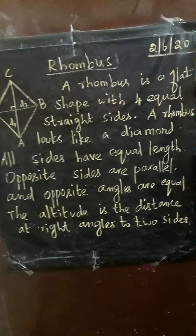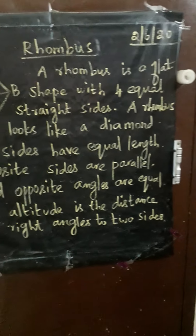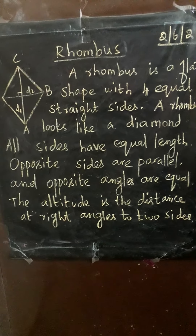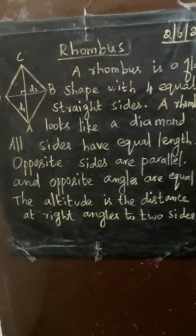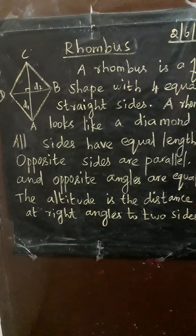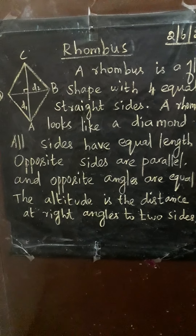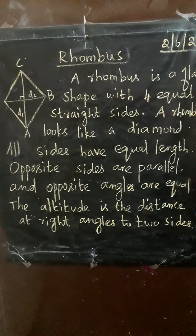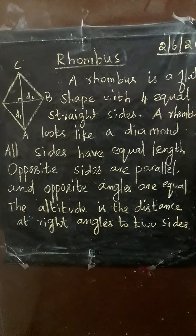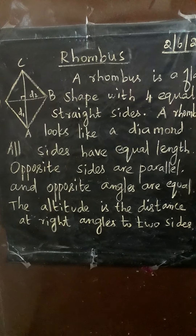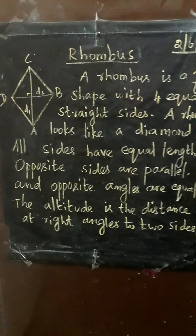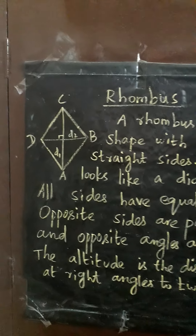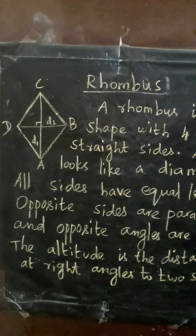In a rhombus all sides are equal and opposite sides are parallel. Diagonals divide the rhombus into four right angle triangles of equal area. The diagonals bisect each other at right angles. Here D1 and D2 are the diagonals.